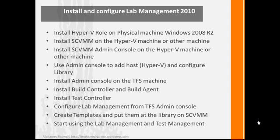After that, install the System Center Virtual Machine Manager admin console on the Hyper-V machine or another machine, and connect the admin console to the Virtual Machine Manager. Use the admin console to add a Hyper-V host and configure the library. After installing the admin console, we use it to add one host — the Hyper-V machine — and create a virtual library on our System Center Virtual Machine Manager. Then install the admin console on the TFS machine.